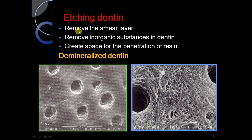Etching the dentine removes the smear layer, removes inorganic substances in the dentine, and creates space for the penetration of resin. This is a photograph of demineralized dentine.